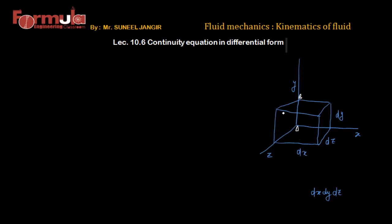Now let me mark the faces. Let's say this is face ABCD and this is face EFGH. We are considering the face ABCD, and in this case everything is varying — the velocity is variable and the density is variable. So we are considering how much mass of fluid is entering this parallelepiped through the face ABCD. The density is ρ, the velocity in the X direction is U, and the cross-sectional area of this face is DY·DZ.